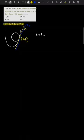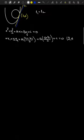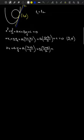First, consider the equation of the circle: x² + y² + ax + by + c = 0. The equation of a tangent at point (x₁, y₁) is: xx₁ + yy₁ + a·(x + x₁)/2 + b·(y + y₁)/2 + c = 0. Substituting (2, 4): 2x + 4y + a·(x + 2)/2 + b·(y + 4)/2 + c = 0.